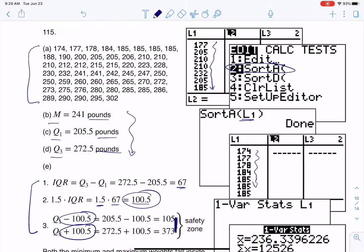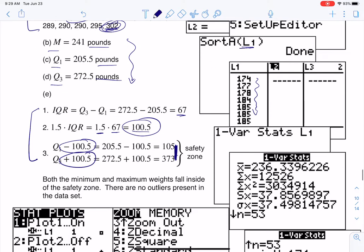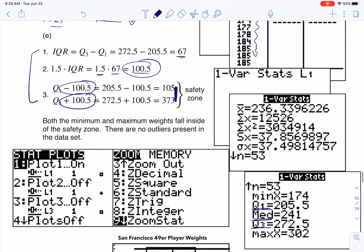So any 49er that weighs somewhere between 105 and 373 pounds is not considered an outlier. And if I look at my min and my max, that's where I always start. I look at my min, it's safe. And I look at my max, it's safe. So there's no outliers here. I don't even have to go through the rest of the data values. If both the max and min fall inside the safety zone, there's no outliers present.